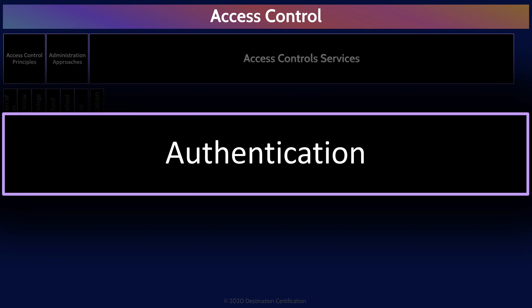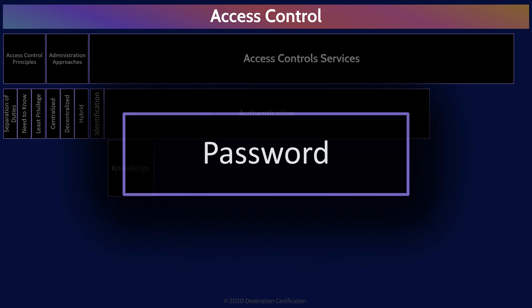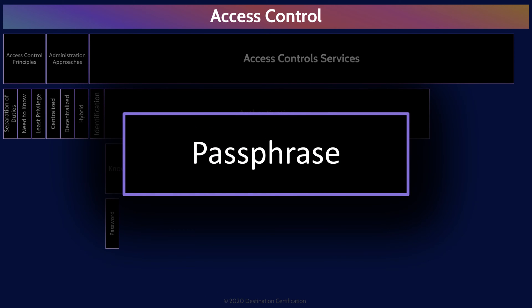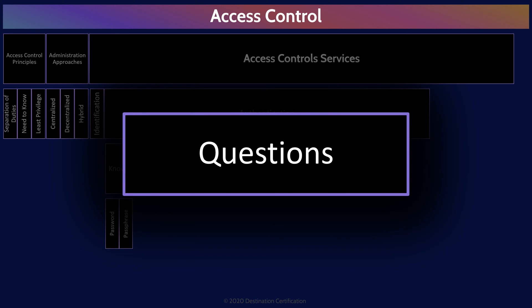Authentication is where the system verifies the user's identity via one of the three factors of authentication: knowledge, ownership, or characteristic. Authentication by knowledge, also referred to as something you know, is where a user verifies their identity by providing some information they have memorized. It could be a password, a passphrase — a long sequence of words that are easy to remember, lyrics from a song, a poem — or it could be security questions like, what's your favorite color of pumpkin?